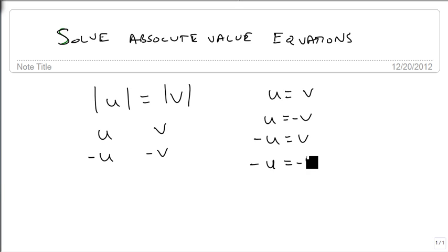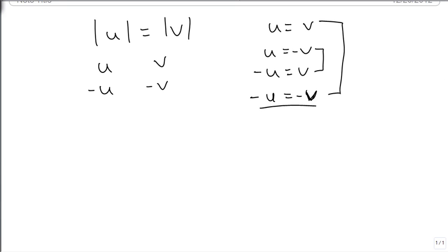But you'll notice as we look at these, that these two are the same. Multiply this one by a negative on both sides, and you get that one. So we really still only need two equations. And so to keep our rule straight, if the absolute value of U equals the absolute value of V, then U equals V, and U equals minus V.